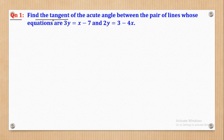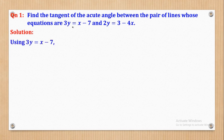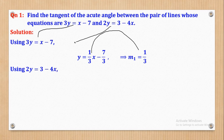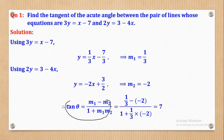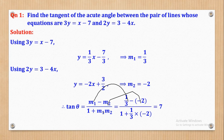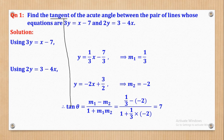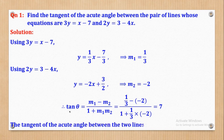Question 1: Find the tangent of the acute angle between two given lines. First rearrange each line to y = mx + c form to get m₁ = 1/3 and m₂ = −2. Then applying tan θ = |(m₁ − m₂)/(1 + m₁m₂)| and substituting, the whole expression gives 7. So the tangent of the acute angle is 7.